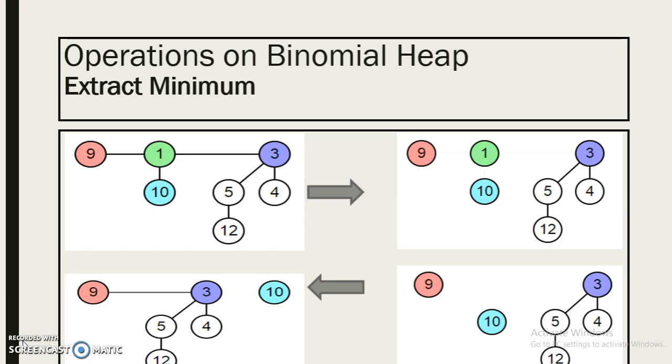In this we first find the minimum node, then it is removed. The tree fragments are then reversed to form another heap. In this example, 1 is the minimum key value, so it will get detached from the binomial heap.